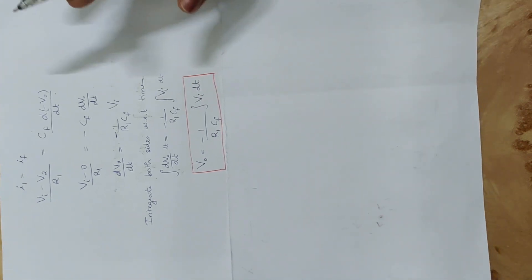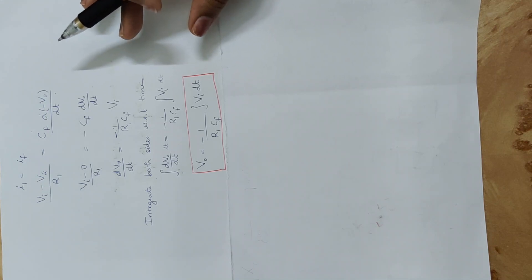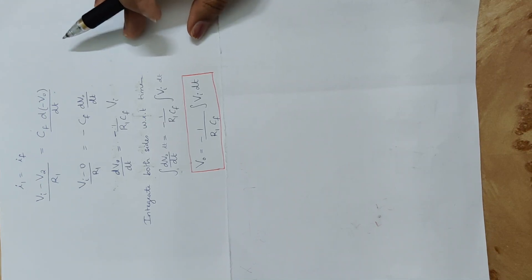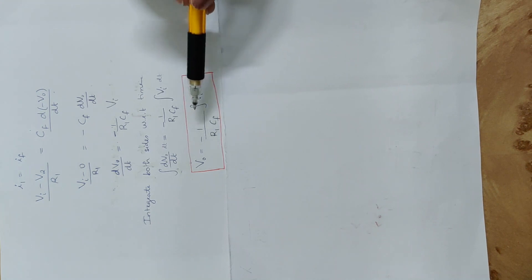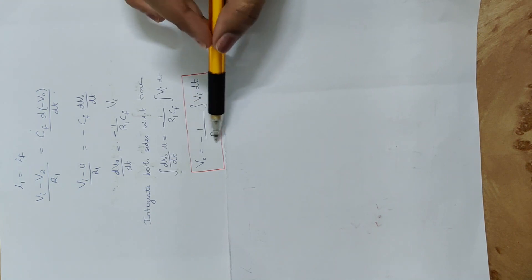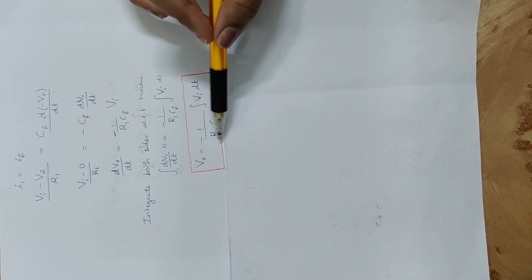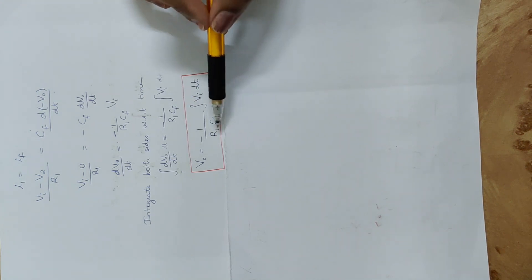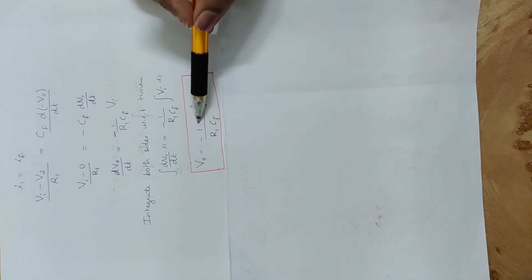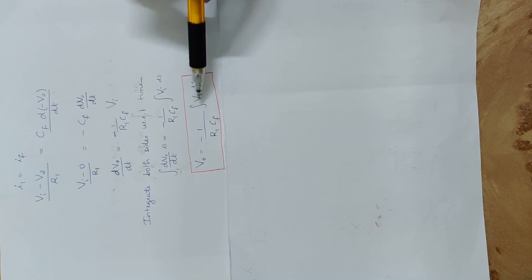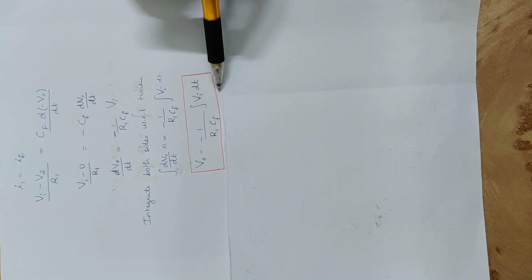This is the output voltage equation. Now, this differs from the differentiator case, where we had RF into C1 in the numerator and the output was proportional to dVi by dt.